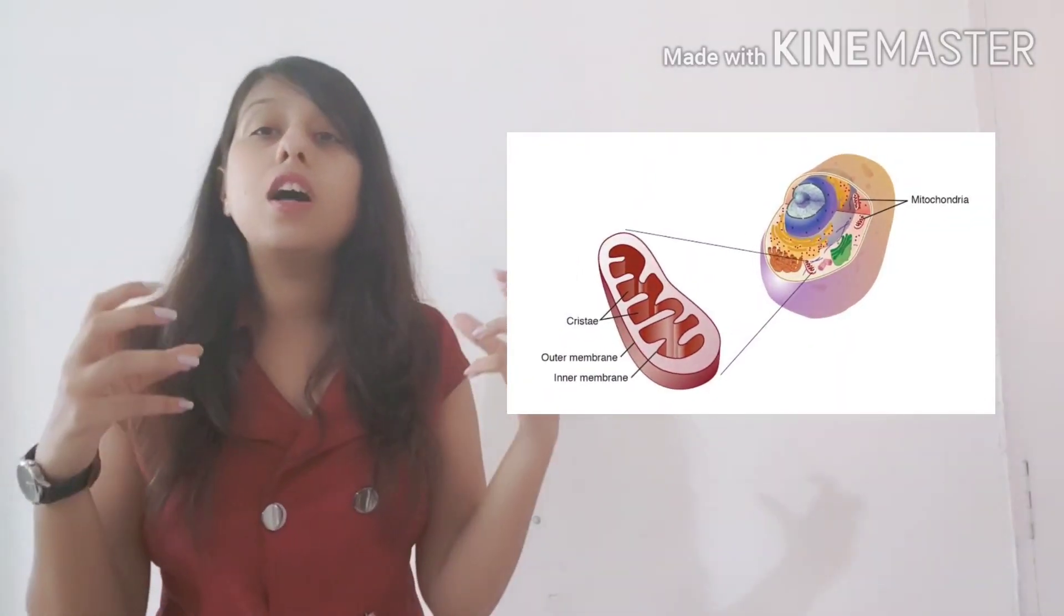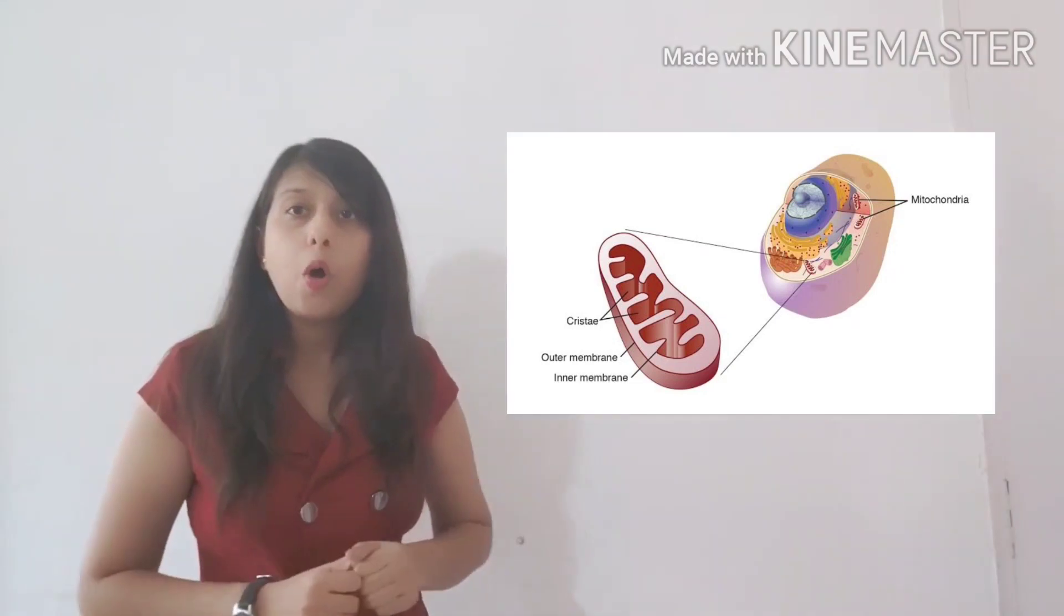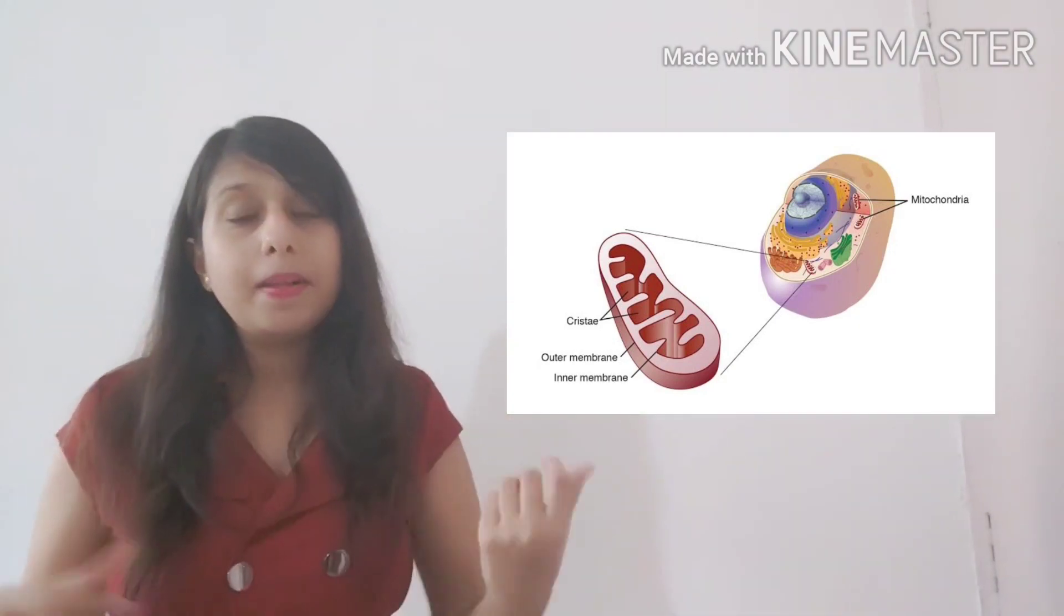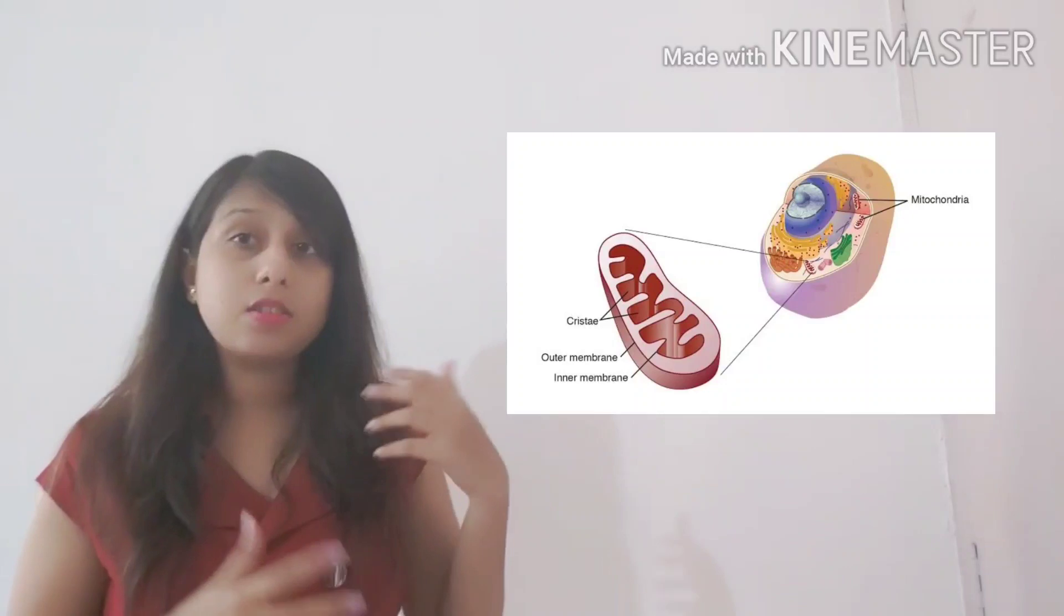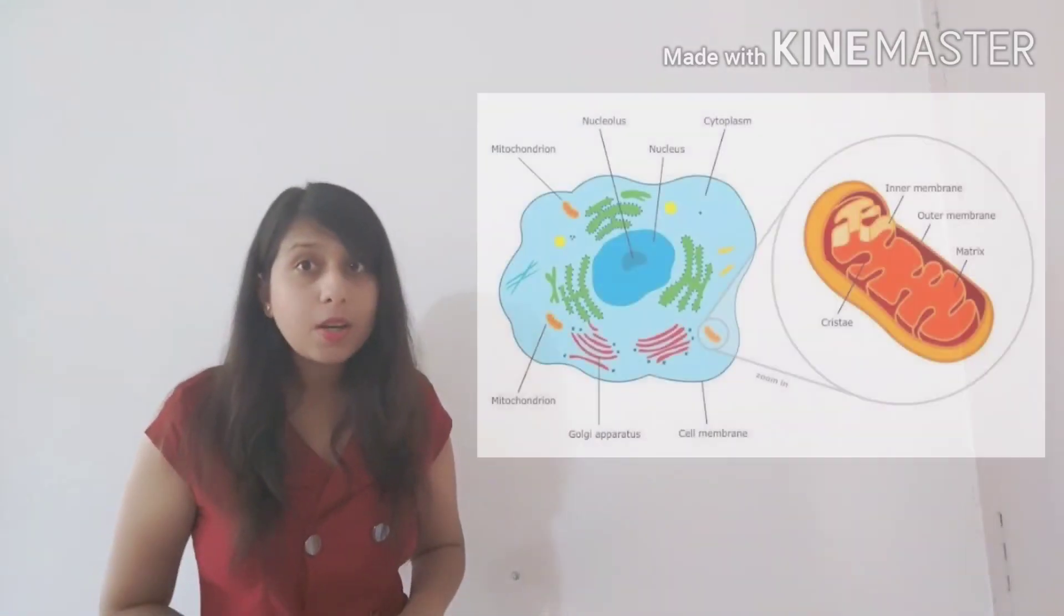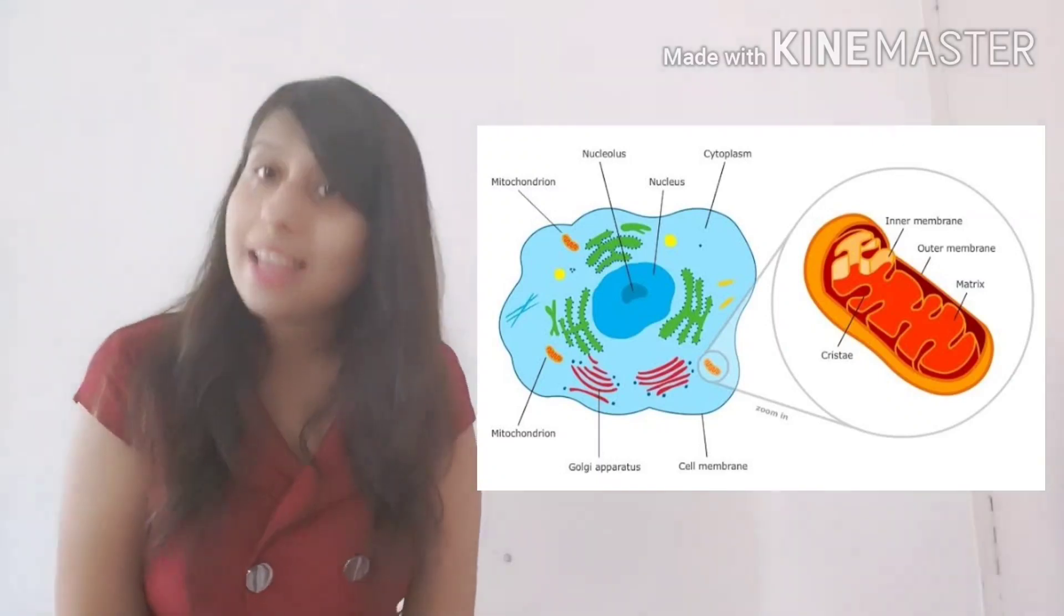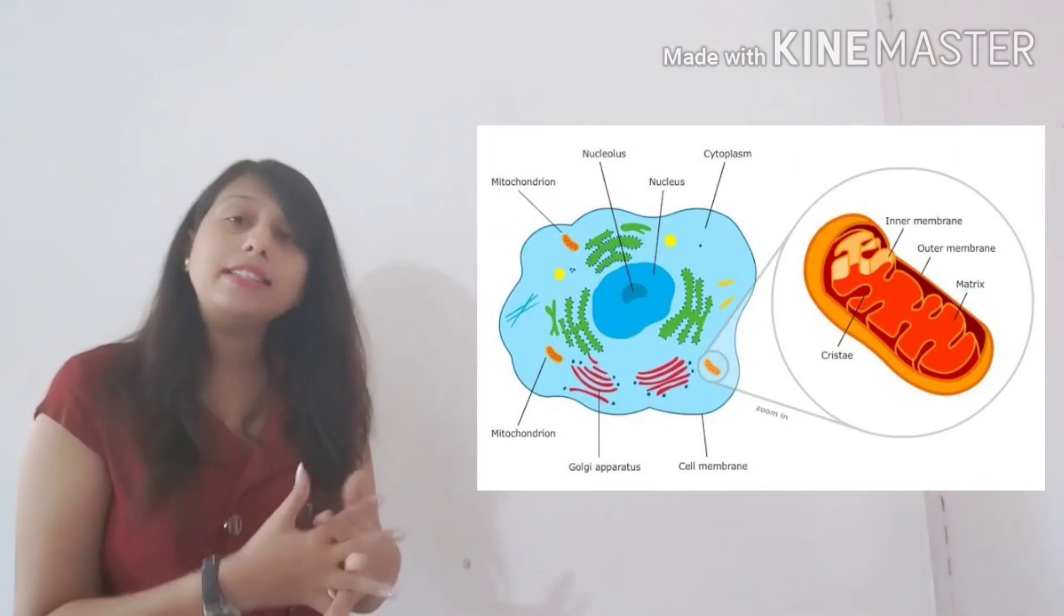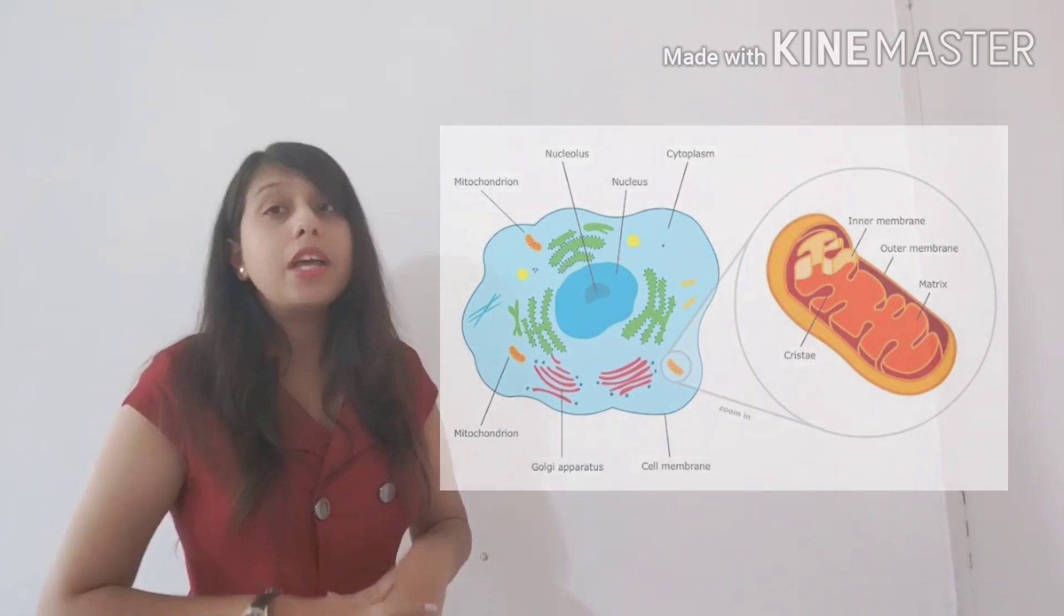So mitochondria is the powerhouse of the cell which provides energy to perform all the activities inside the cell. So this mitochondria is covered by two membranous structure. The outer membrane is simple. The inner membrane is folded. The outer membrane is also porous. The porosity of the membrane helps in exchange of glucose. Why is glucose required? Because the breakdown of glucose only releases energy, and that is also done inside the mitochondria. So therefore, the powerhouse of the cell is mitochondria.